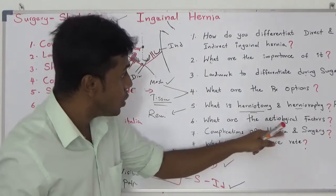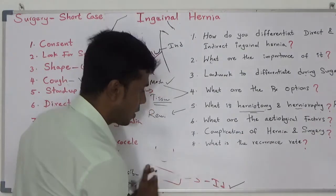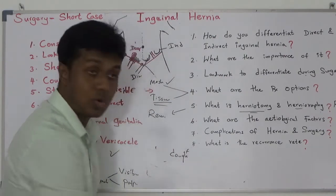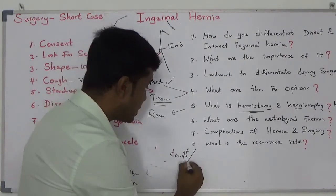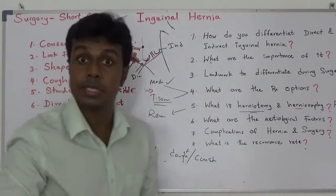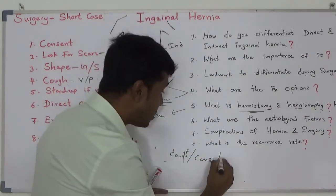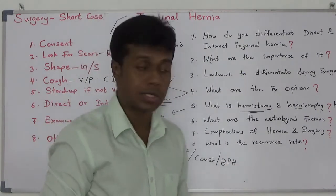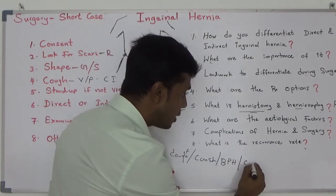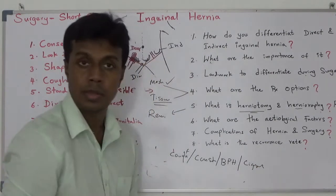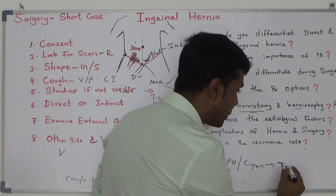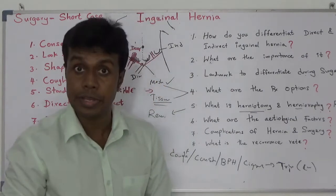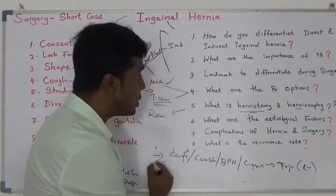Next: what are the etiological factors for hernia? Chronic cough and constipation increase intra-abdominal pressure. Benign prostatic hyperplasia — while urinating you increase intra-abdominal pressure. Cigarette smoking increases tryptase activity, which breaks down collagen and causes the anterior abdominal wall to become weak.